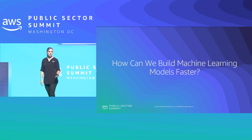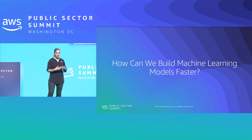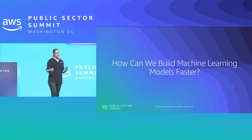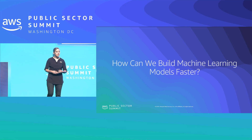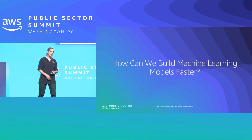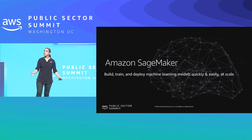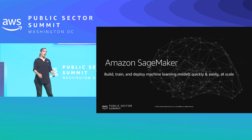The reason why we're all here is to answer this question: how can we build machine learning models faster? At AWS, we have a very broad and deep machine learning stack, which is all about enabling people to build machine learning models and incorporate machine learning faster. Today we're going to focus on one of those services — Amazon SageMaker — which is our managed end-to-end machine learning platform designed to accelerate your ability to build, train, and deploy machine learning models.